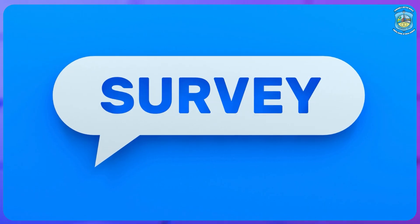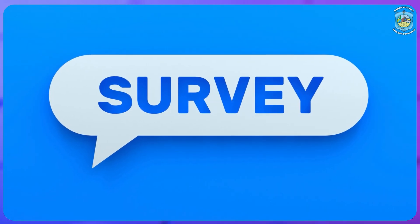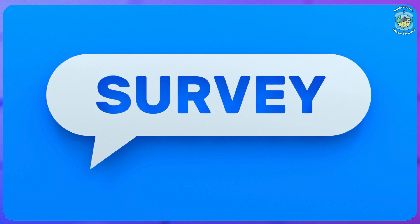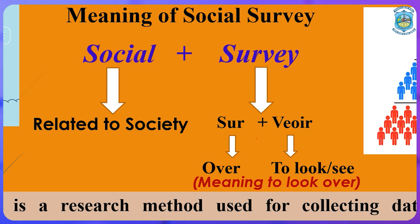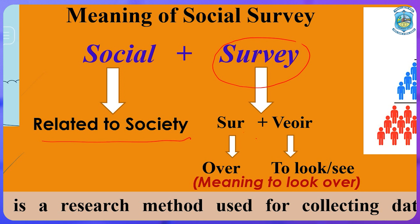Social survey — we can split the word into two: social plus survey. Social means something related or pertaining to society. The word survey can be divided into 'sur', meaning over, and 'vey', meaning to look or to see. So the entire meaning is to look over.